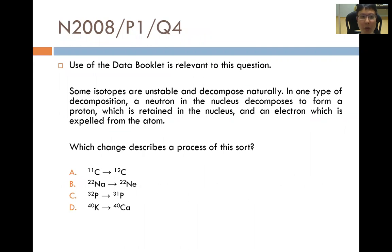On to the first question: November 2008, paper 1, question 4. Some isotopes are unstable and decompose naturally. In one type of decomposition, a neutron in the nucleus decomposes to form a proton which is retained in the nucleus and an electron which is expelled from the atom. Which change describes a process of this sort?